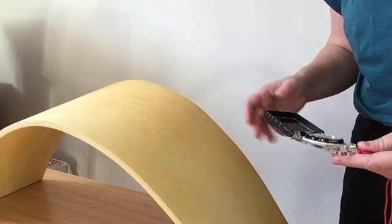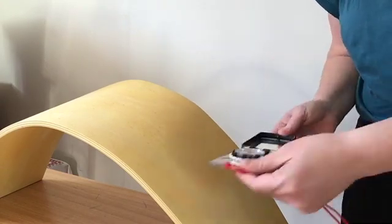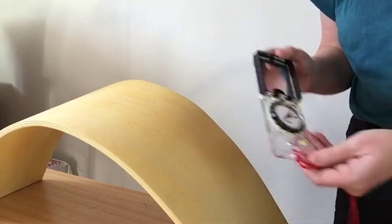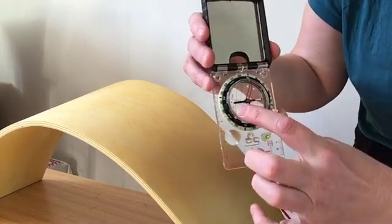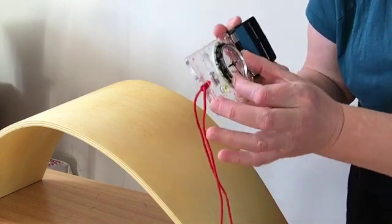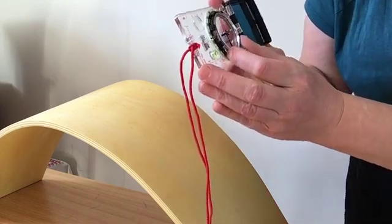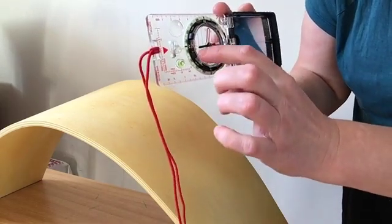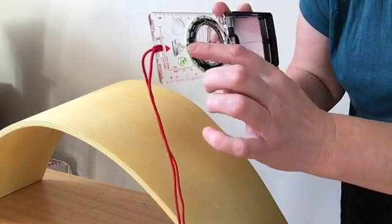Now we know the strike, we need to measure the dip. So we need to make use of the clinometer function on our compass. In order to make use of that, we need to align it so that it's usually east-west.